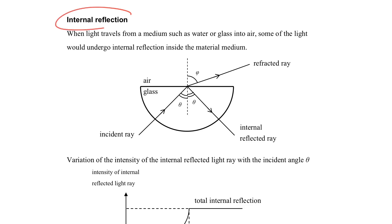Actually, internal reflection is not something very special — it keeps on occurring when we put the light from the optically denser medium directed to the optically less dense medium. So usually, before we talk about total internal reflection, we just focus on the refracted ray and simply ignore this internally reflected ray. However, this internally reflected ray is always present when the light travels from the optically denser medium to an optically less dense medium.